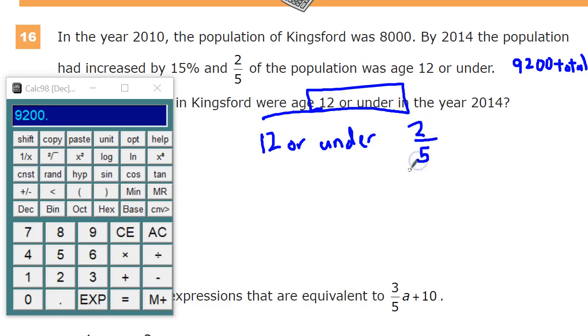Now I'll define my 12 or under people. That's 2 out of 5. A couple ways you can do that. If you want to convert, we're going to multiply, but if you want to do 2 divided by 5, you could do that. And you get 0.4. And then you'll do 9,200 times 0.4. 3,680.